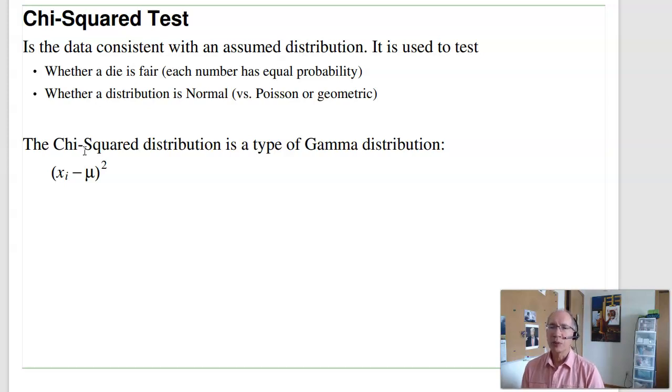It can also test whether a distribution is normal, or Poisson, or geometric. A chi-squared test is a type of gamma distribution. What you're doing is comparing the data versus the mean squared. That'd be a gamma distribution.